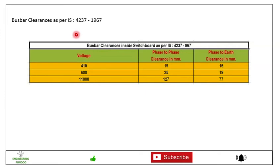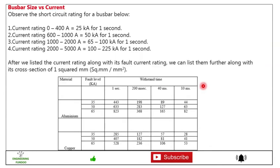Friends, then there will be a busbar clearance as per IS 4237-1967. Busbar clearance inside the switchboard as per IS 4237-967. For voltage 415, phase to phase clearance in mm required is 19 mm, phase to earth clearance required is 16 mm. For 600 voltage, phase to phase clearance required is 25 mm, phase to earth clearance required is 19 mm. Similarly for 11000 voltage it will be 127 and 77.